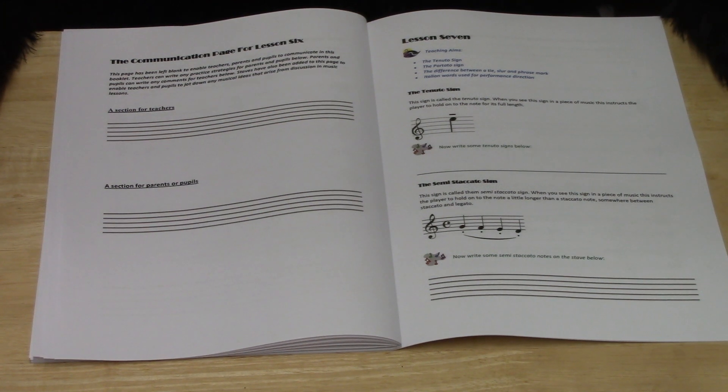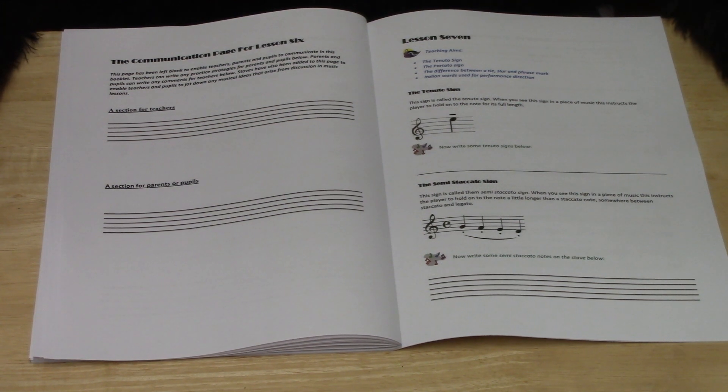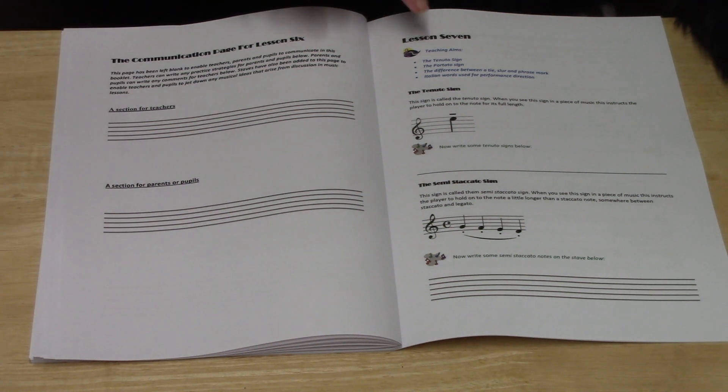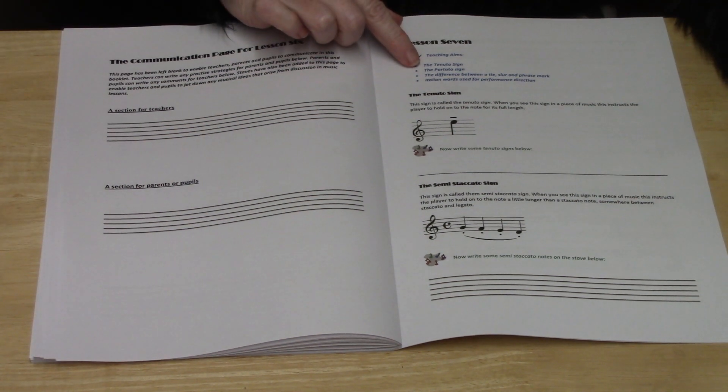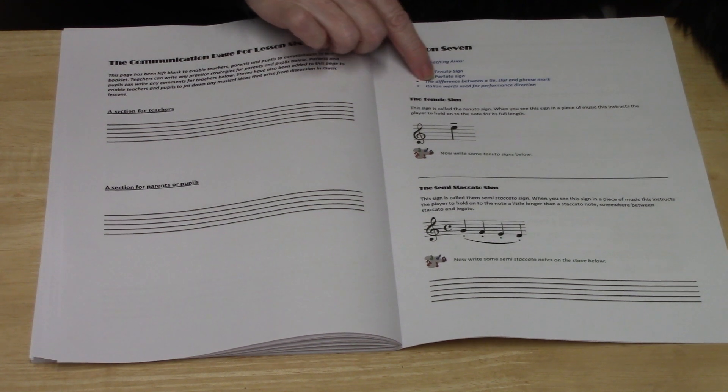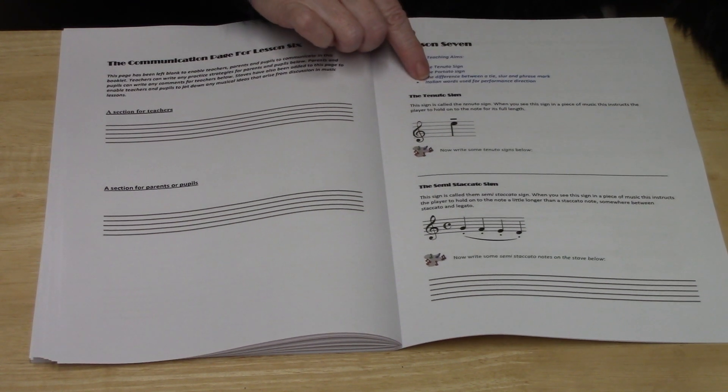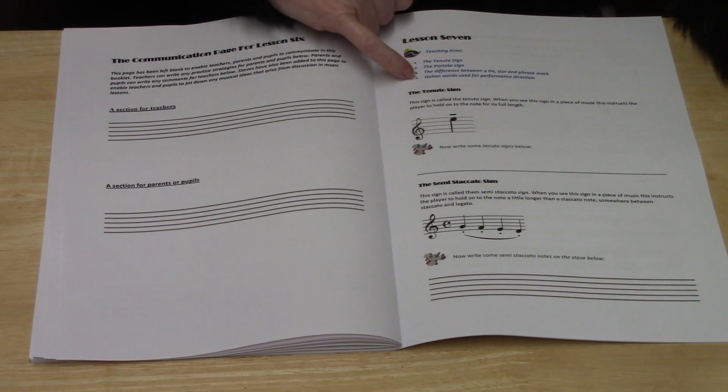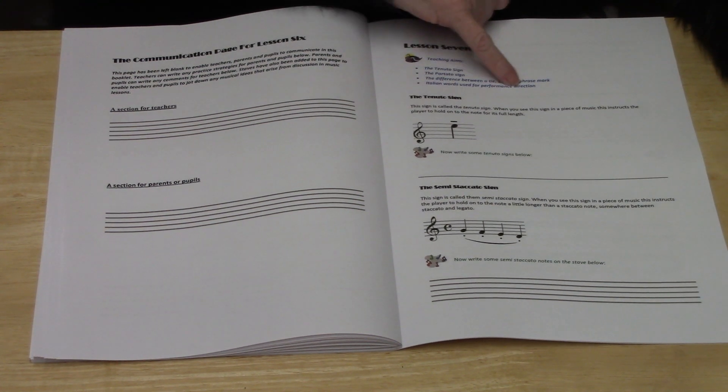Hello and welcome to Lesson 7 of the Grade 2 Theory Tutor Book. In this lesson we will learn about the tenuto sign, the portato sign, the difference between a tie, slur and phrase mark, and Italian words used for performance direction.